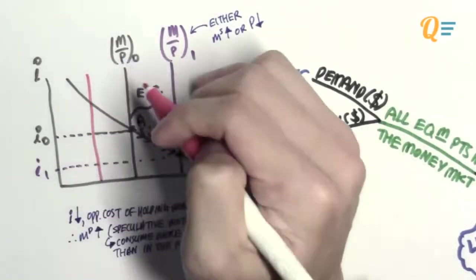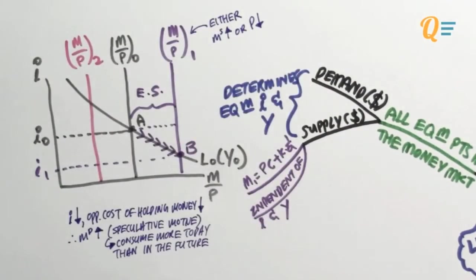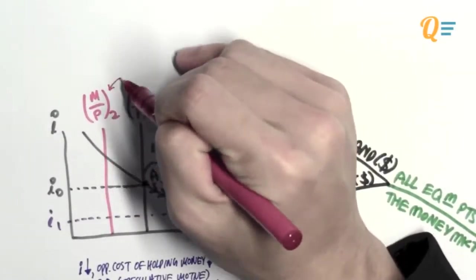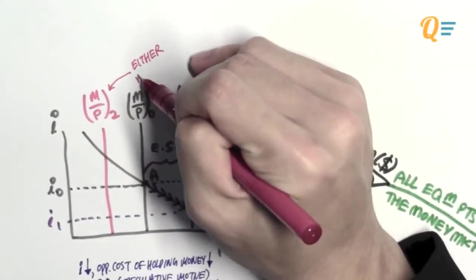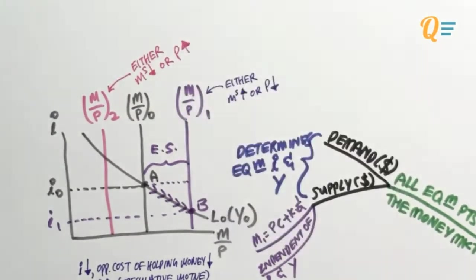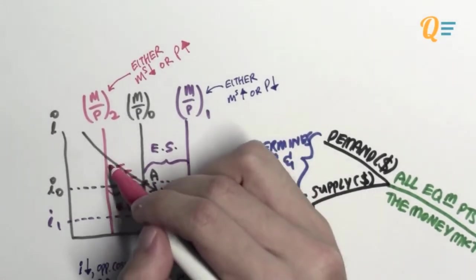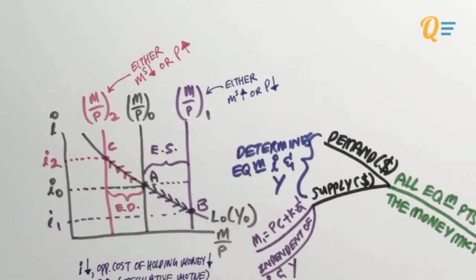Let's move on to the case whereby the real money supply falls. The entire vertical line will shift to the left. The real money supply can fall due to two reasons: either the nominal money supply has fallen or the general price level has increased. So if the interest rates did not change, then you have an excess demand for money. When the interest rates level is at I0, the demand is more than the supply. For the money market to clear to a new equilibrium, interest rates will have to rise, which brings us to point C.